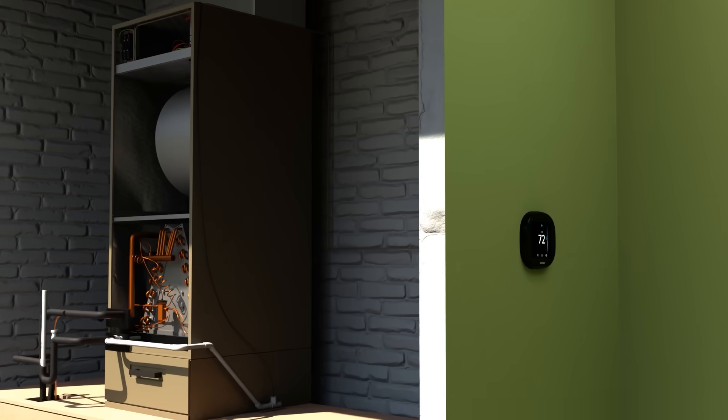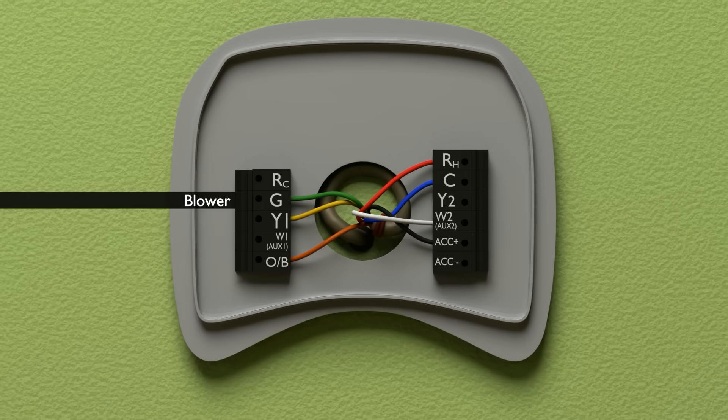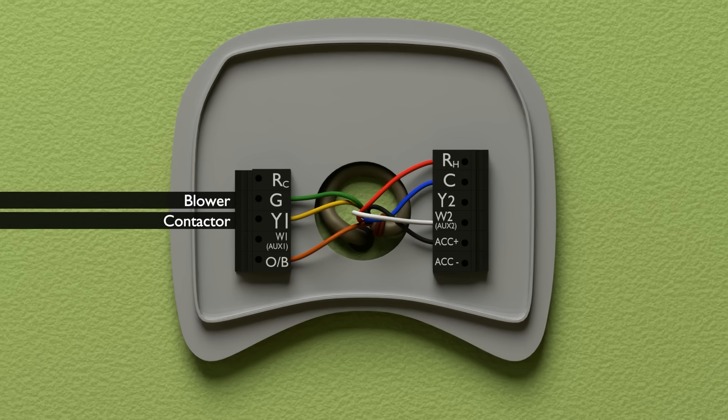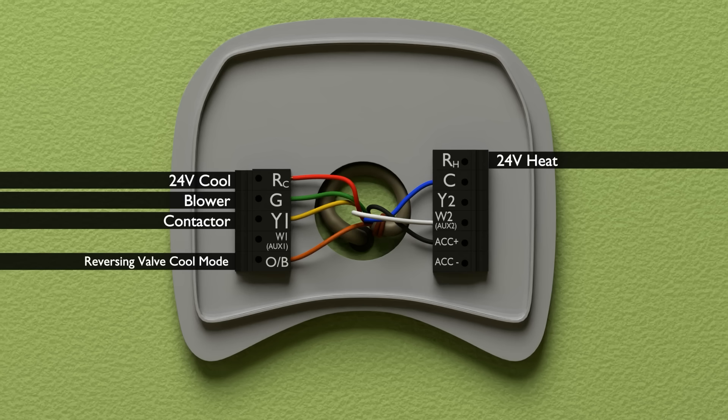Now let's go over our thermostat. G is for the blower call, or 24 volts to the blower motor. Y is the contactor, which turns the condenser on in both heating and cooling mode in a heat pump. O or B is the reversing valve, with O being the most common, orange, which is powering the reversing valve to operate in cooling mode. Meaning that when the system operates in cooling mode, it energizes the O terminal and the orange wire. RH is constant 24-volt power for heating mode, and RC is constant 24-volt power for cooling mode. In most cases, these are the same.